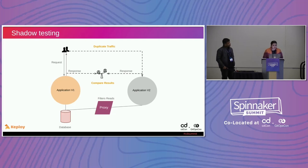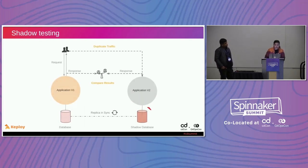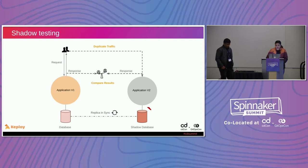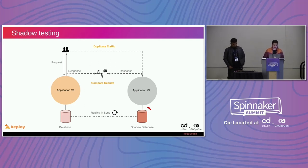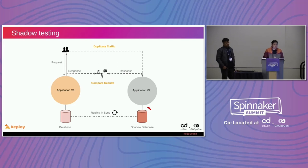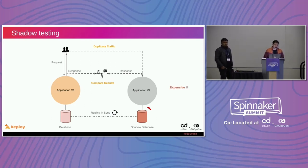We planned to replicate the database — create an in-sync replica of our production database and connect V2 to that. In theory it makes sense, but in practice there was a replication lag. Whenever a request is played on the production application and a change occurs in the database, synchronizing that with duplicated traffic becomes harder. It required a lot of operational effort to set up, and the replication lag made it unsuccessful.